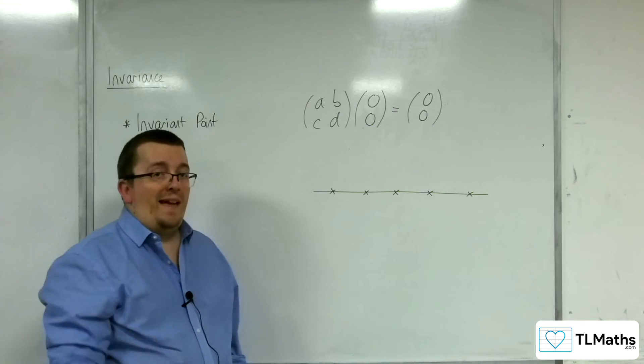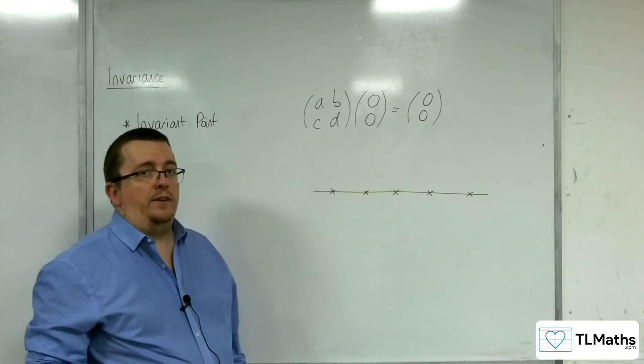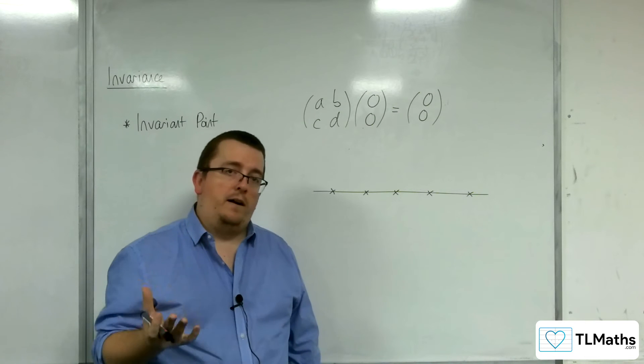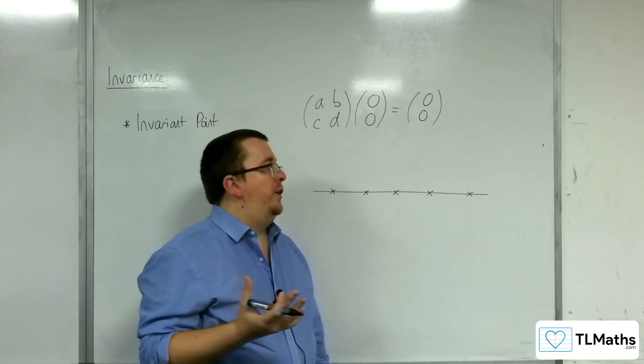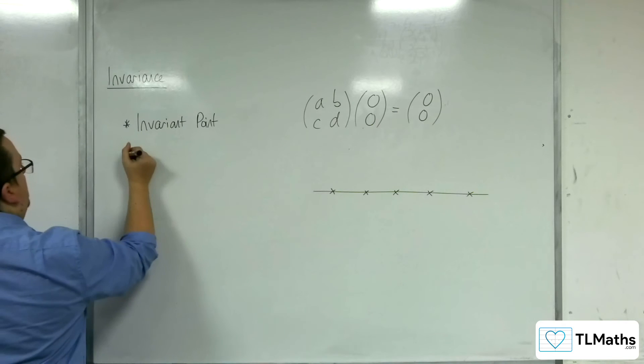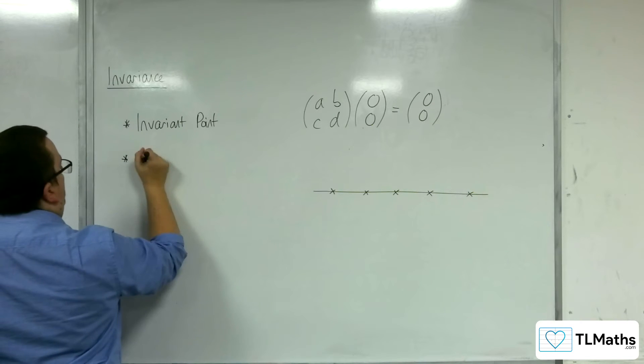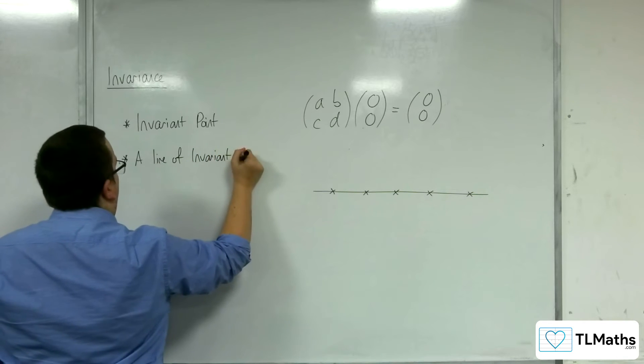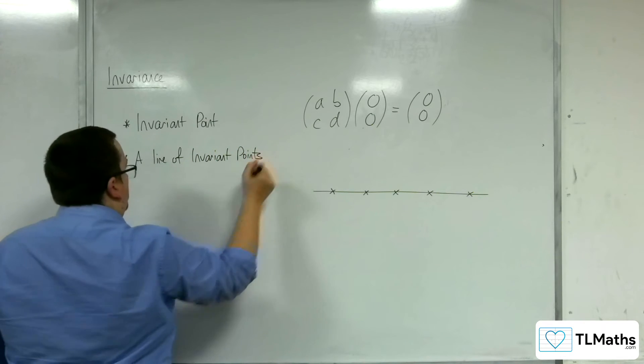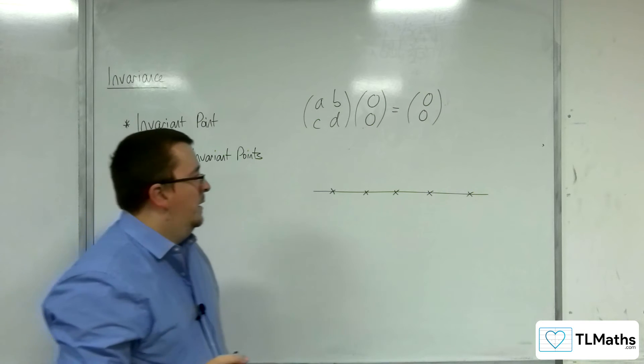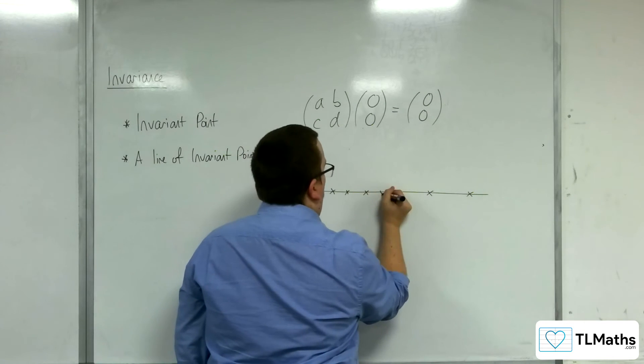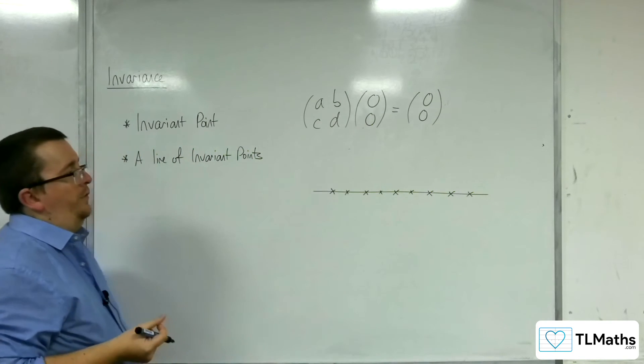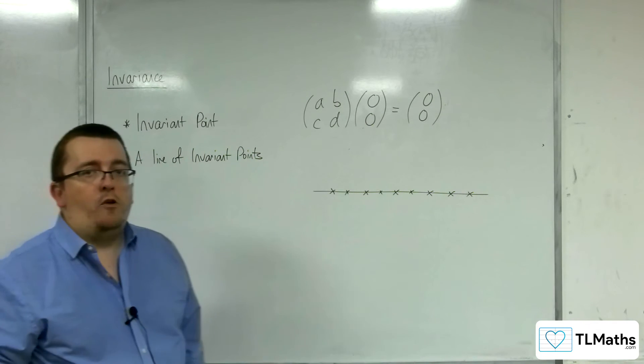So you could imagine that these are all points along the x-axis, for example. After a reflection in the x-axis, these points will remain precisely where they are. And so this would be a line of invariant points. And of course, there are other points in between as well, not discounting those.